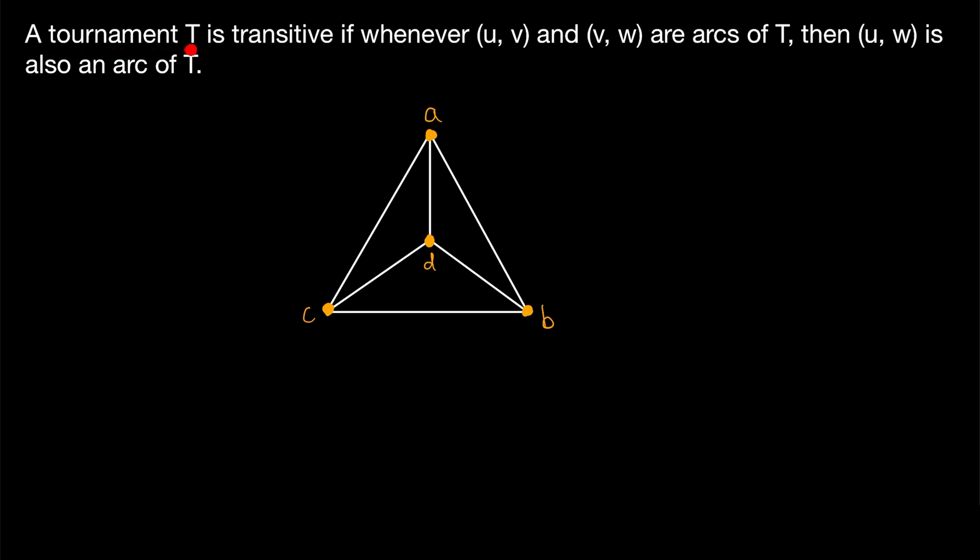We say a tournament is transitive if whenever (u,v) and (v,w) are arcs of the tournament, then (u,w) is an arc as well. So if u is adjacent to v and v is adjacent to w, then u has to be adjacent to w in a transitive tournament.